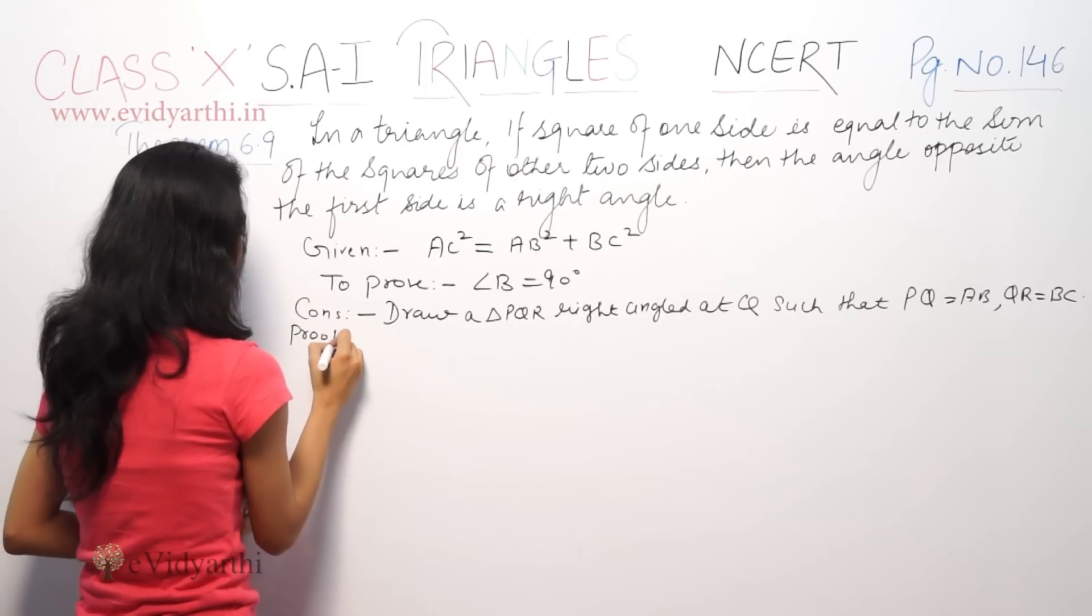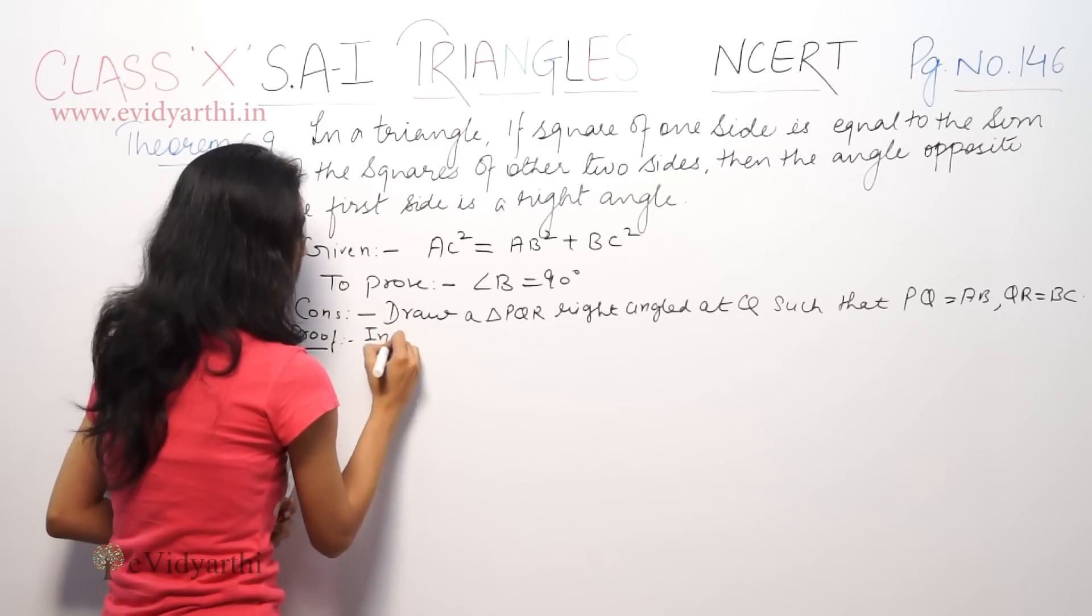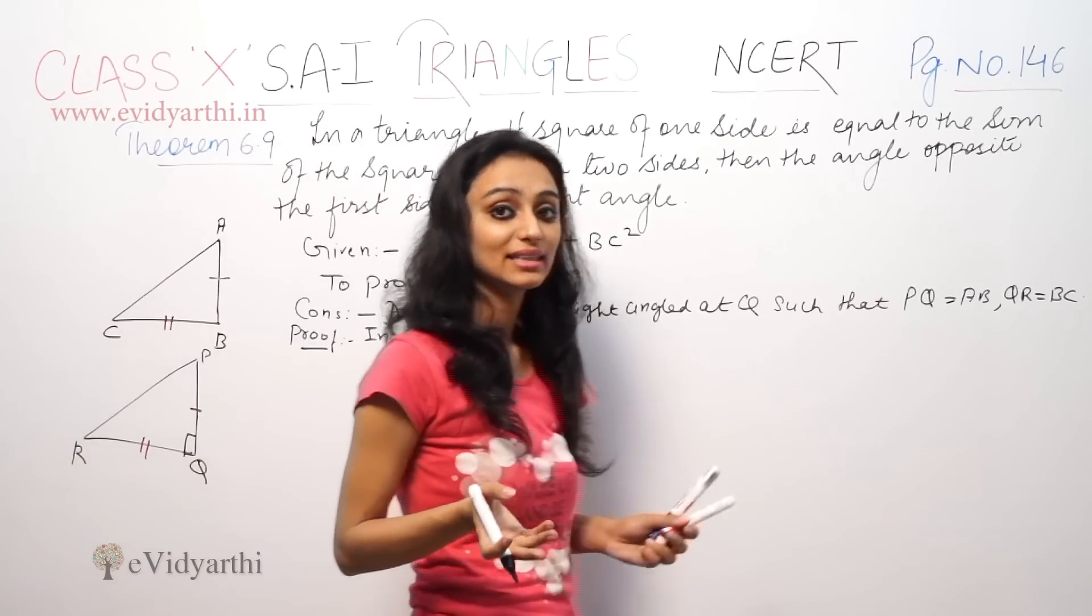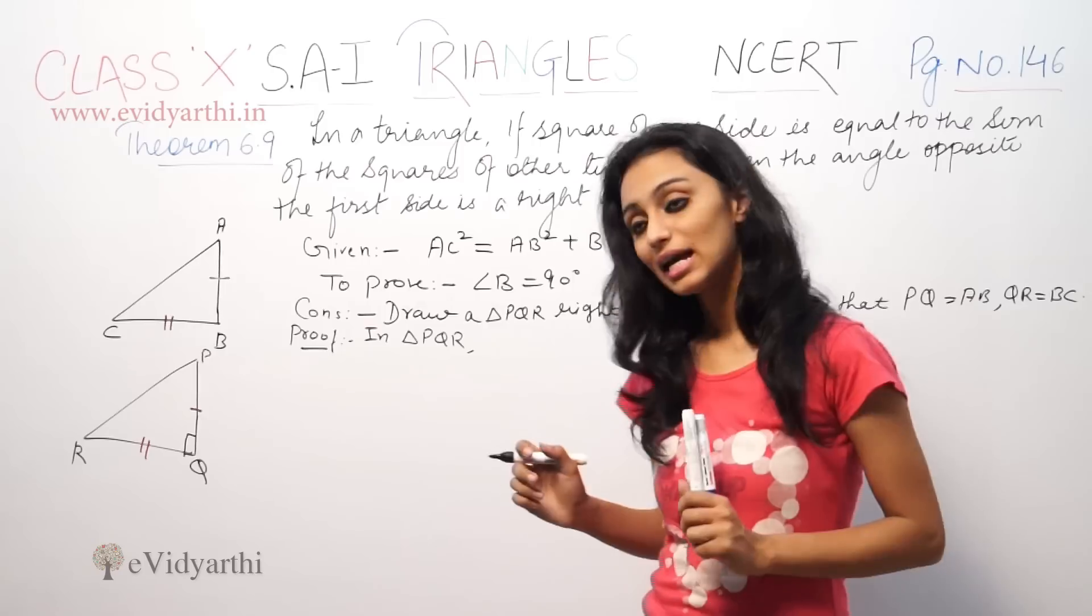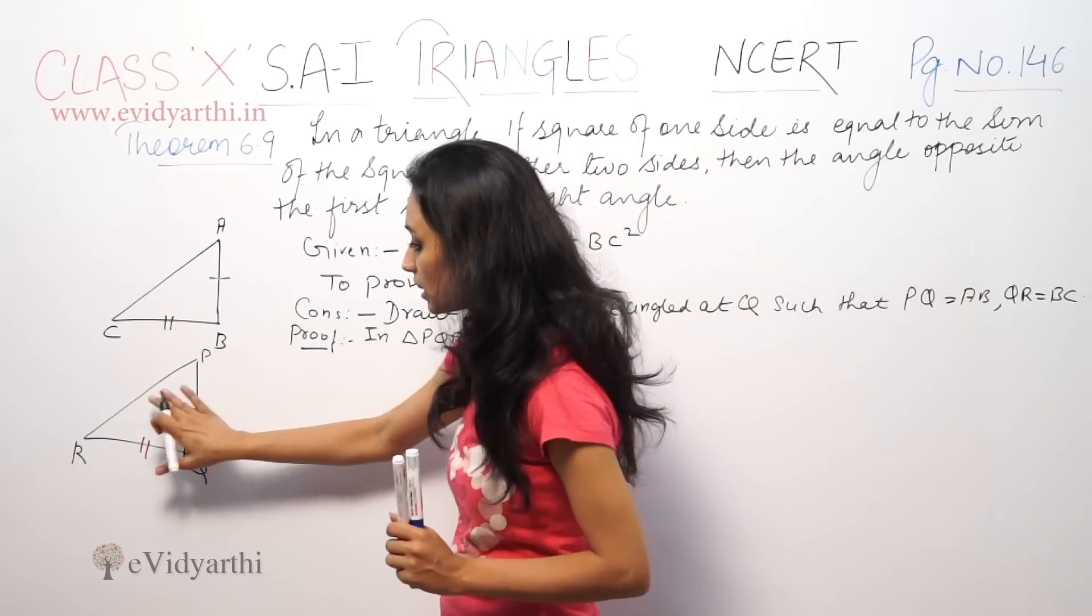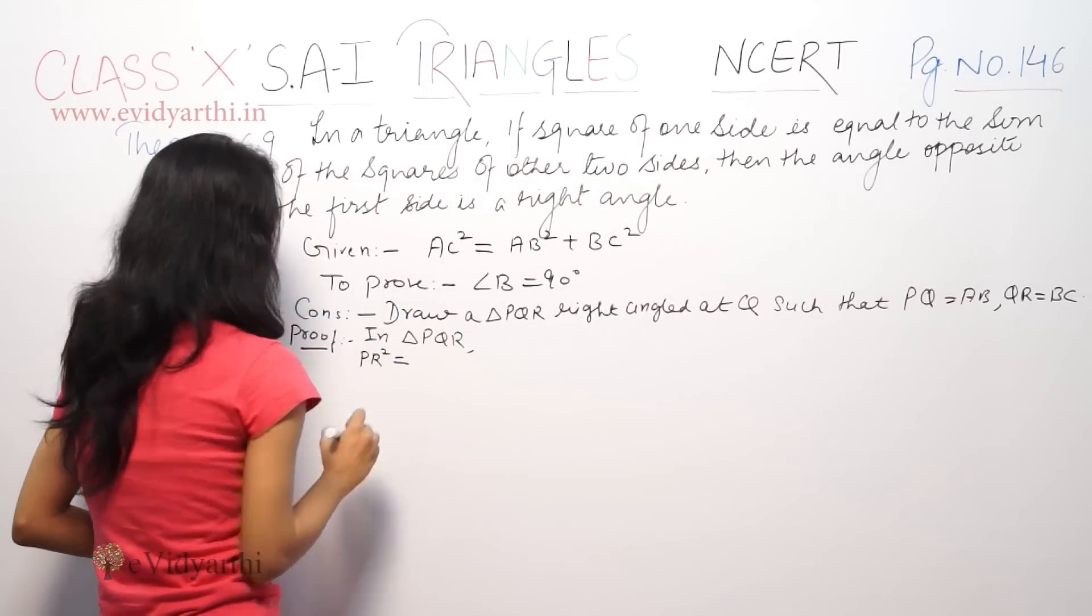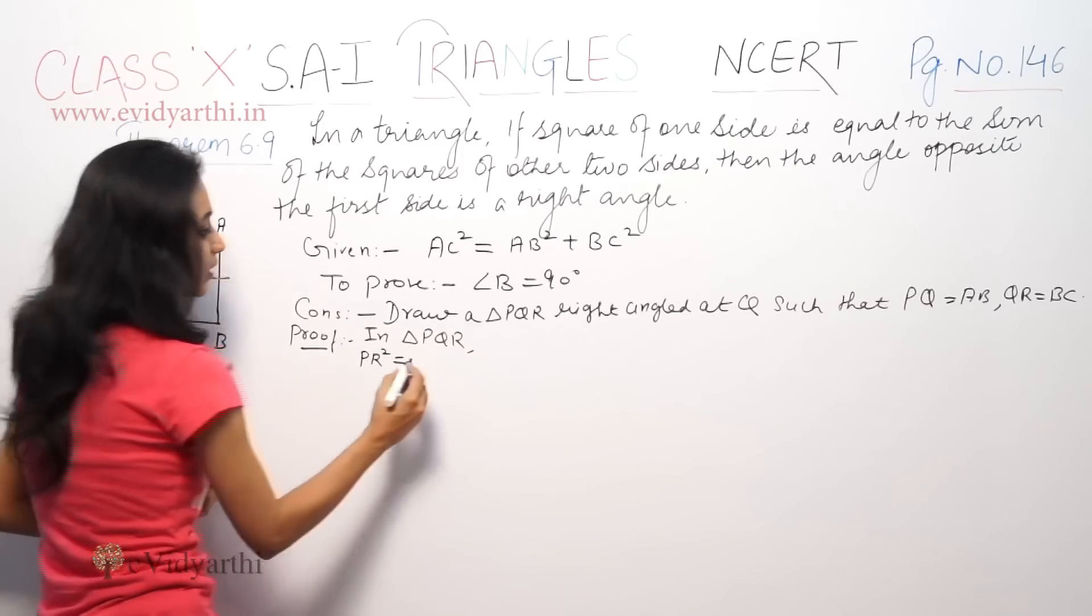Now, in triangle PQR, we can apply Pythagoras theorem. So, PR square is equal to PQ square plus QR square.